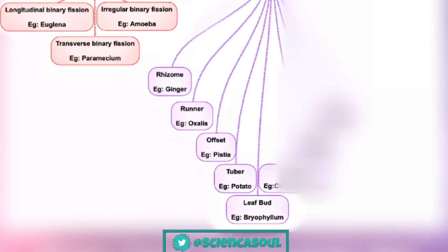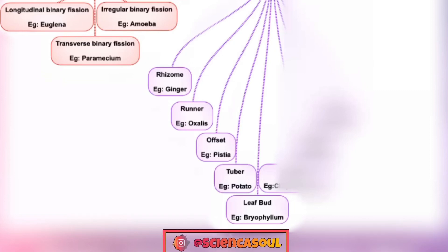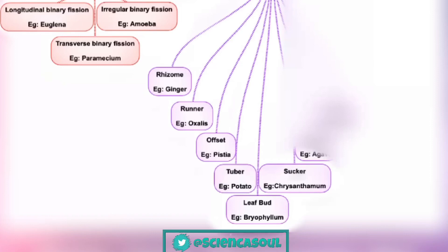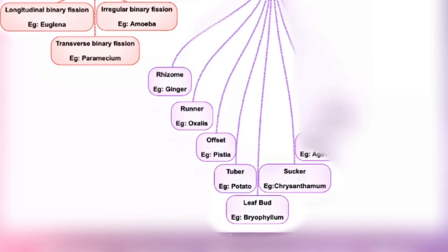Next is leaf bud — for example, Bryophyllum. Leaf bud is a form of asexual reproduction in which new plants grow from buds on the margin of the leaves. Next is sucker: it is a mode of asexual reproduction and vegetative propagation — a non-green slender stem branch which arises from the underground base of an erect shoot or crown.